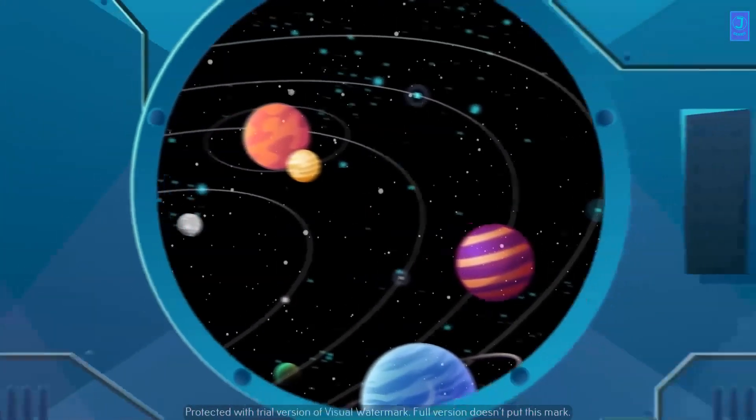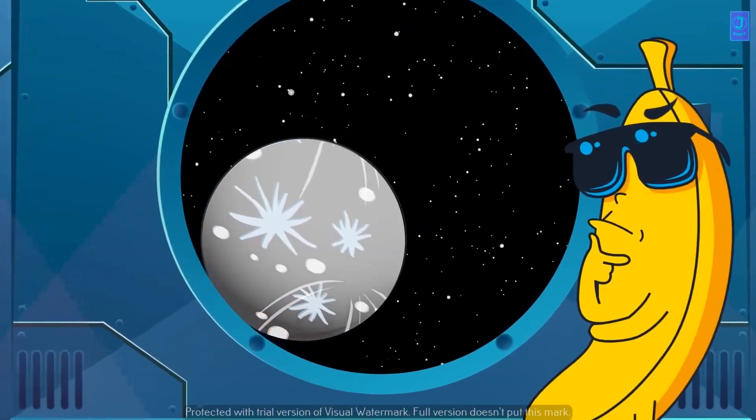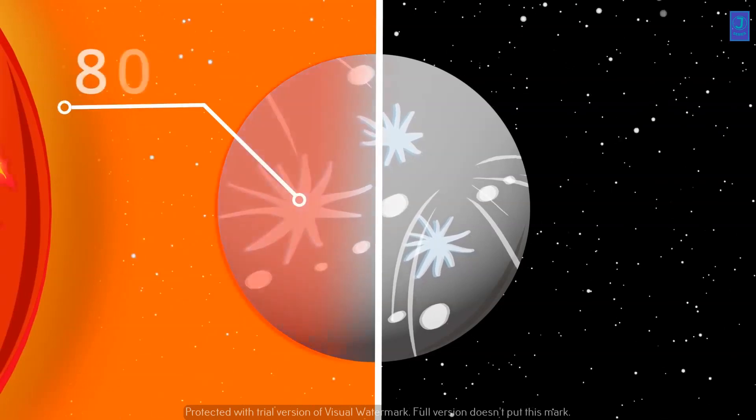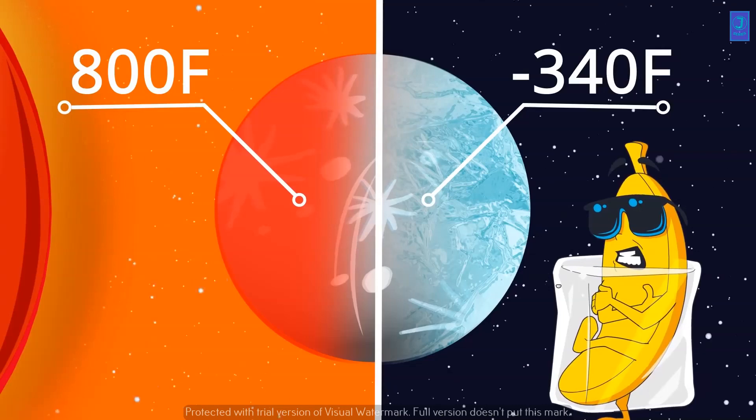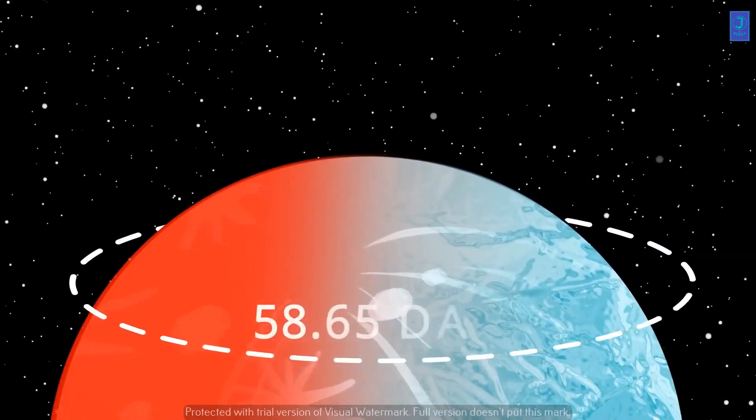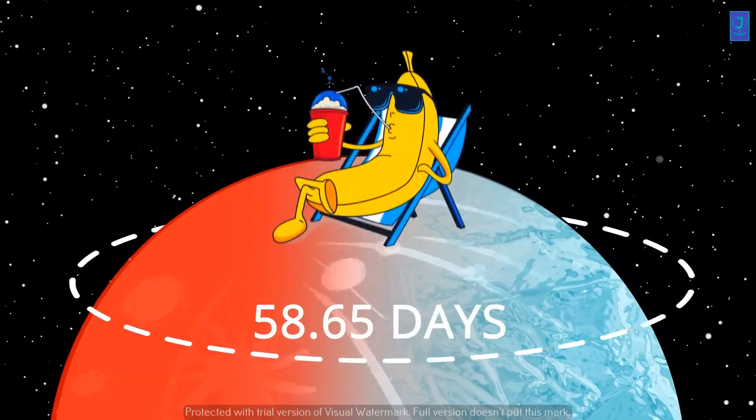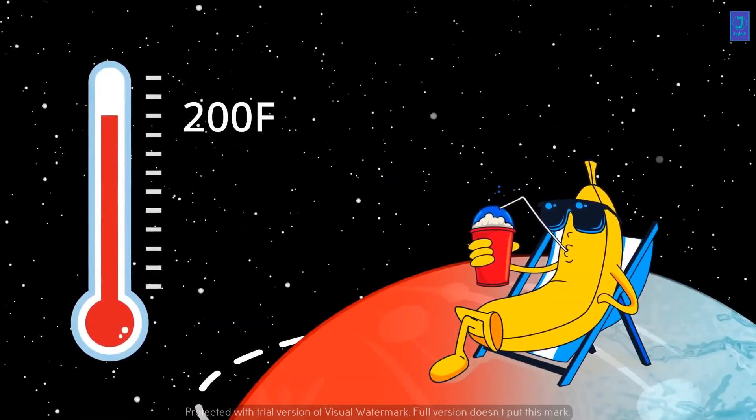Of all the planets in the solar system, Mercury has one of the largest changes in temperature. During the day, it reaches crazy 800 degrees Fahrenheit. While at night, the temperature plummets to minus 340 degrees Fahrenheit. While the planet's rotation is relatively slow, you might spend some time on the border of two regions with the temperature of about 200 degrees Fahrenheit there.